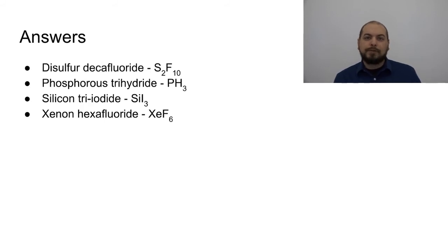Alright. So now we've had a few seconds to work on it. Let's go through the answers. The first name that we're given is disulfur decafluoride. Disulfur means that there are two sulfur atoms, so we're going to put S subscript 2. And decafluoride represents 10 fluorine atoms, which means it's S2F10.